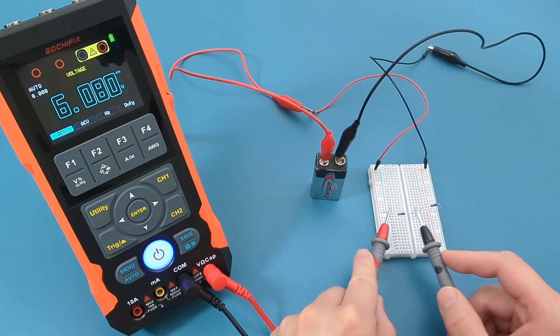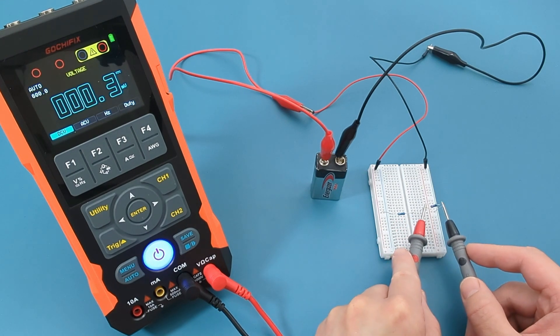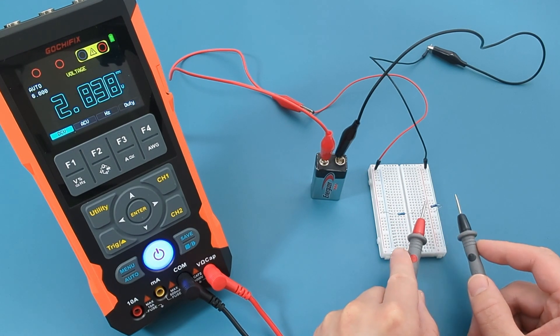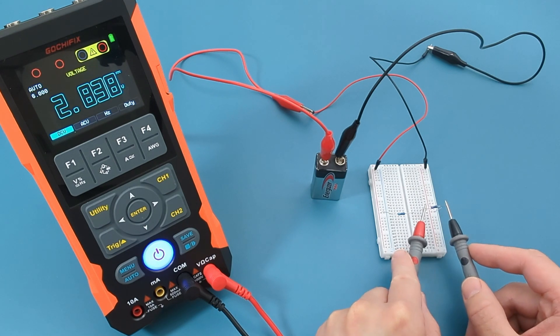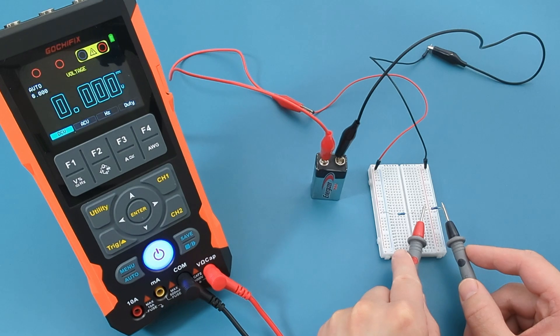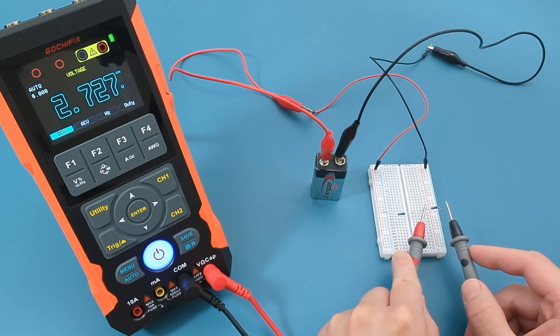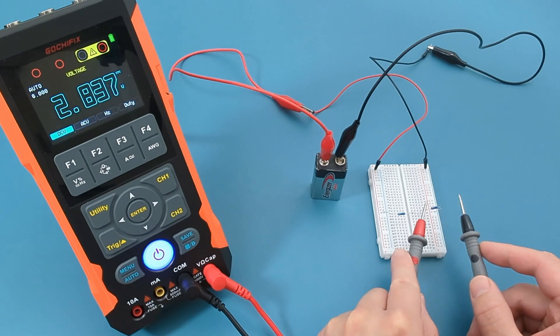Let's check the voltage across R2. The reading shows slightly less than 3 volts. This is expected since we use a 220 ohm resistor instead of a 250 ohm resistor. If you use a 250 ohm resistor, you should get around 3 volts.